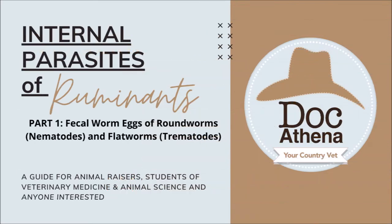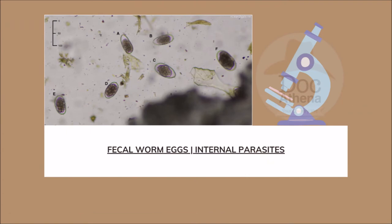Today, we are going to discuss internal parasites of ruminants focusing on fecal egg worms. This is a guide for animal raisers, students of veterinary medicine and animal science, and basically anyone who is interested in this topic. Here is a photo from ResearchGate.net showing us the fecal eggs under the microscope. The fecal eggs presented are called Strongyl-type eggs, which are thin, smooth-shelled containing anything from eight cells to larvae.